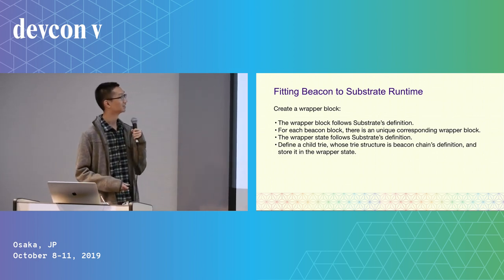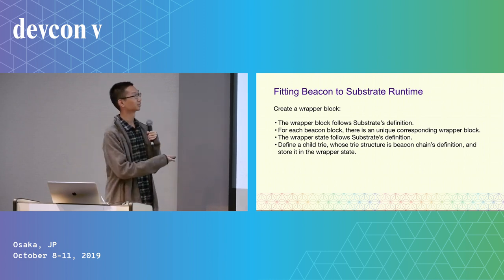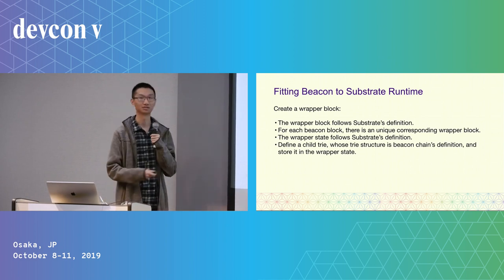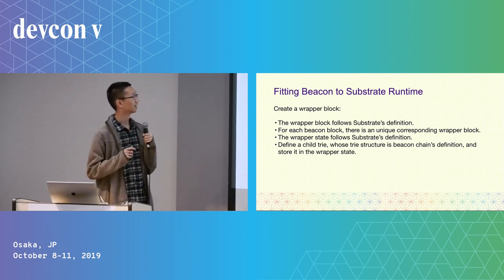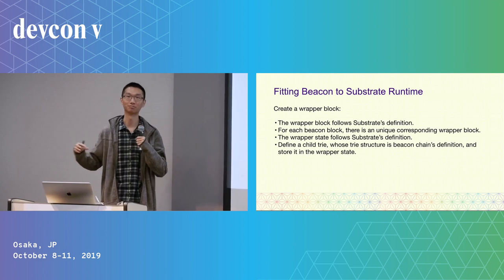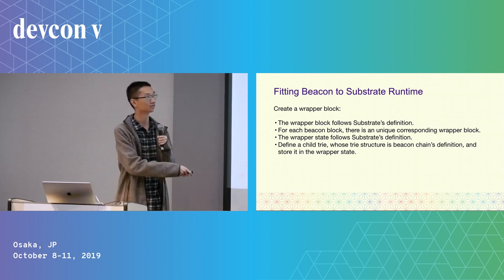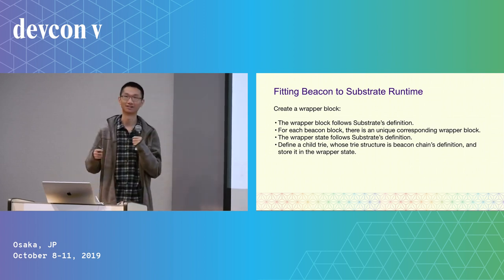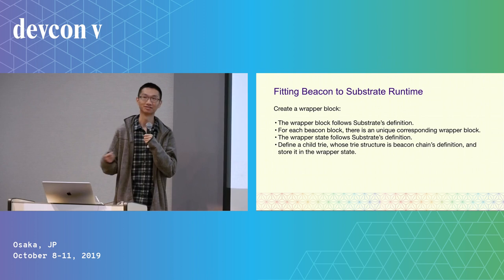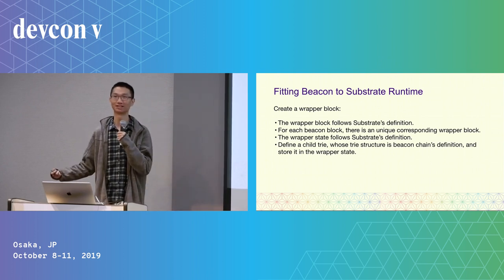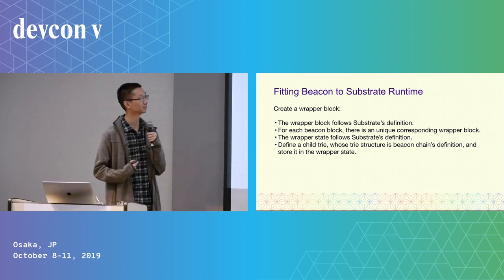What we end up doing is we create a Vapor Block. This basically means we create a separate block definition, which we call a Vapor Block, that follows the substrate definition of what a block is. We also have the unmodified beacon block, and for each beacon block, we make sure there is a unique corresponding Vapor Block. So given a beacon block, you can always generate a Vapor Block — you might need some past block data, but it should be theoretically possible.